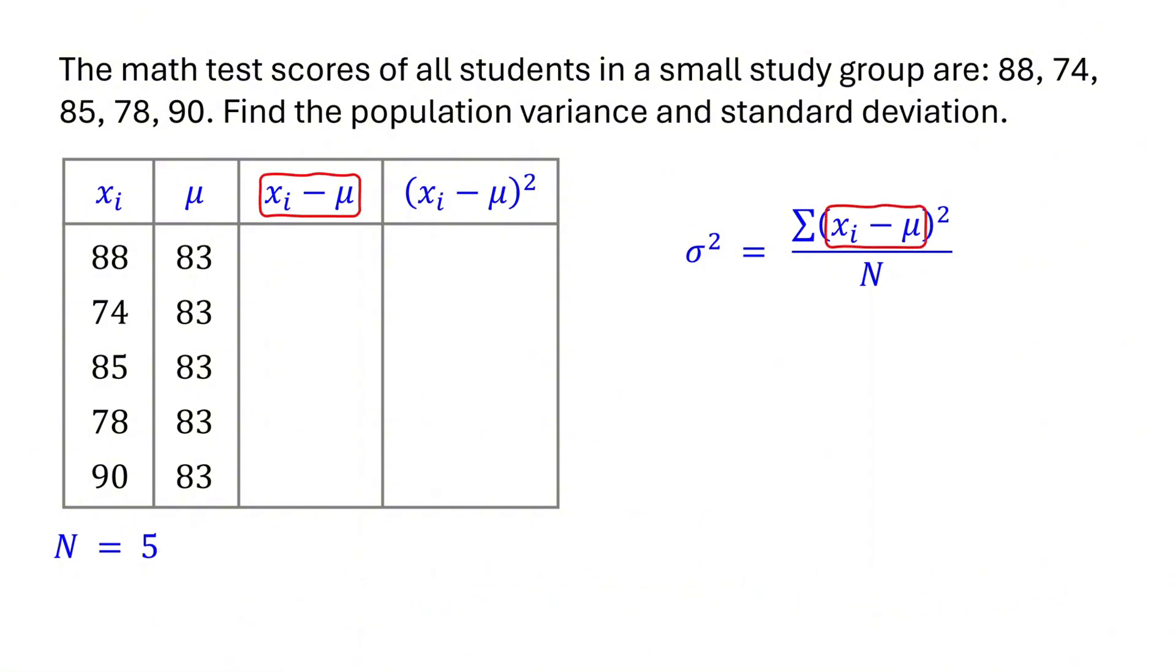Next, subtract the mean from each data point. 88 minus 83 is 5. 74 minus 83 is negative 9. 85 minus 83 is 2. 78 minus 83 is negative 5. 90 minus 83 is 7.